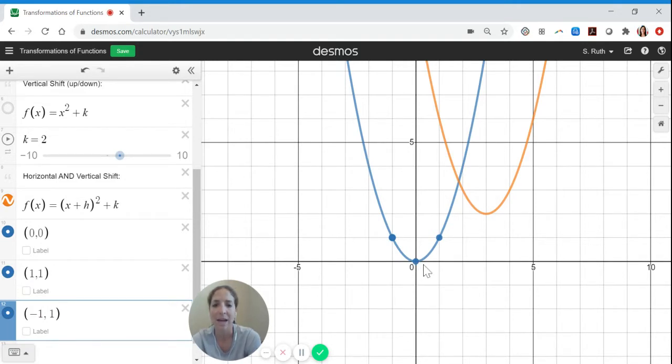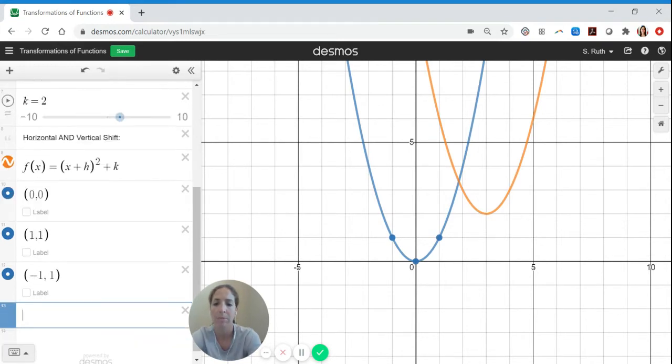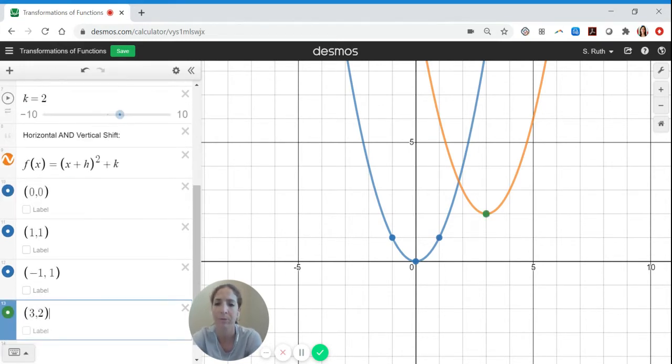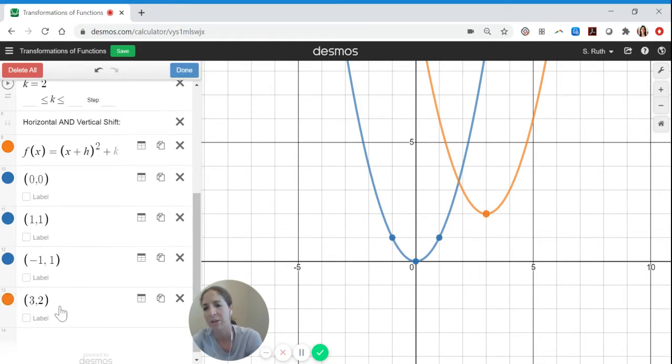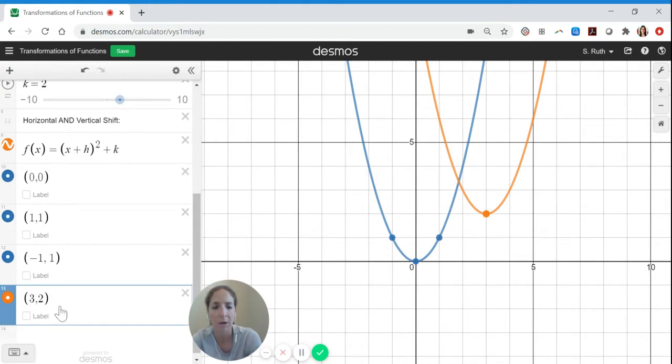And what I literally do is I take a couple key points from the base graph and make them do that motion. So what I mean by that is I need this point at the vertex, this point at 0, 0, to move right by 3 and up by 2. So its new home becomes 3, 2. I would plot that as my vertex for my new graph. And I'll do another video where I don't do it on Desmos to make it a little bit more clear.